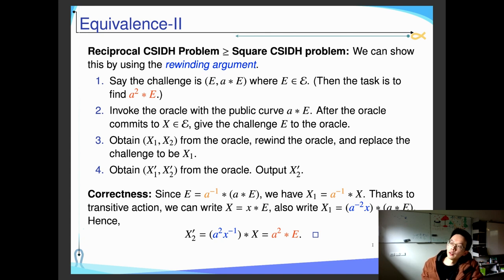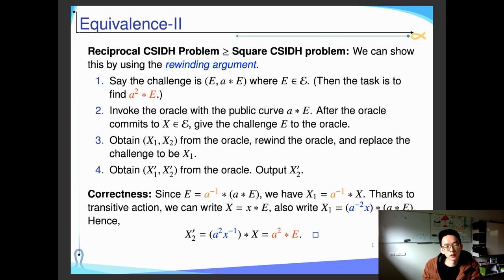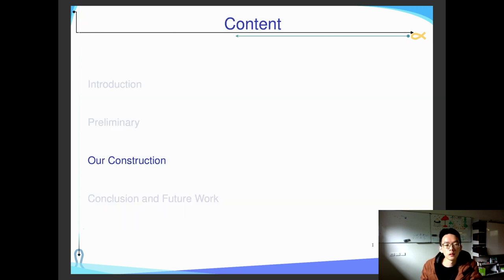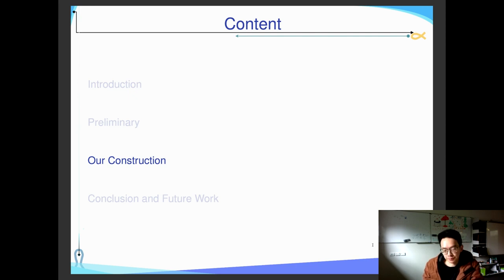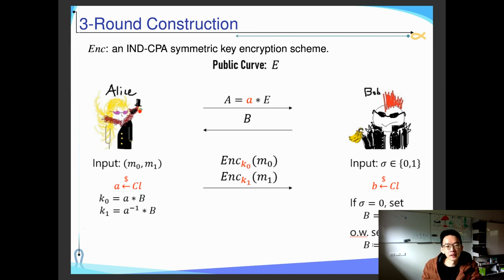So we have shown that the reciprocal CSIDH problem is as hard as the square CSIDH problem. When you are given the order of this group, you can say the reciprocal CSIDH problem is as hard as the computational CSIDH problem. Next, we are going to show our construction of oblivious transfer. We start from a three-round construction with Alice as sender and Bob as receiver.